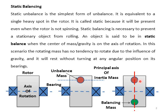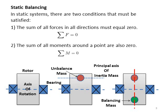This means if the rotor is stationary it will remain stationary. In the presence of an unbalanced mass the rotor will definitely rotate. Sometimes we want equipment or machinery to be static for maintenance purposes. The system is said to be statically balanced if two conditions are met: number one, the sum of all forces in all directions must be equal to zero; and number two, the sum of all moments around a point must also be equal to zero.